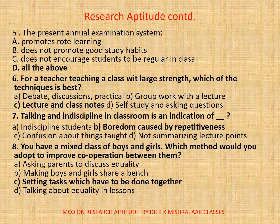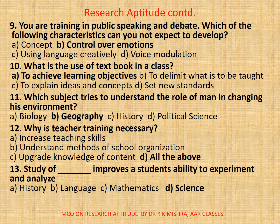Question 8: You have a mixed class of boys and girls. Which method would you adopt to improve cooperation between them? A) asking parents to discuss equality, B) making boys and girls share a bench, C) setting tasks which have to be done together, or D) talking about equality in lessons. The correct option is C — setting tasks which have to be done together.